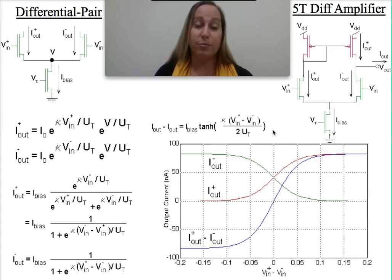A nice function typically goes from minus 1 to 1. If I were to just do some nice algebra, what I would find is it would be hyperbolic tangent of kappa, VN plus minus VN minus over 2 times ut. So I've got an extra factor 2 in there, which is kind of interesting, in some sense normalizing out the strength on the input voltages.